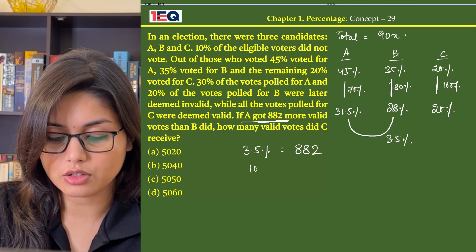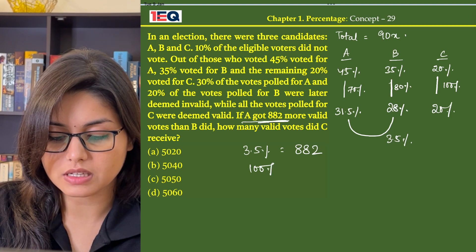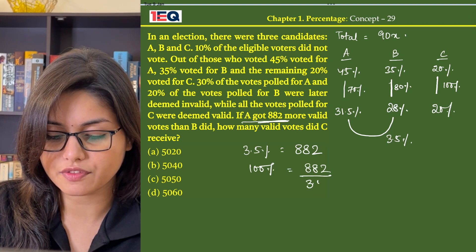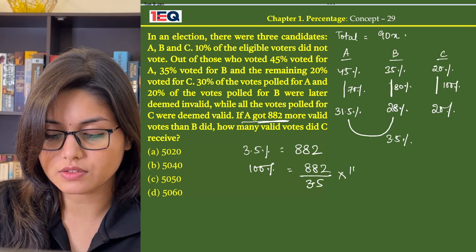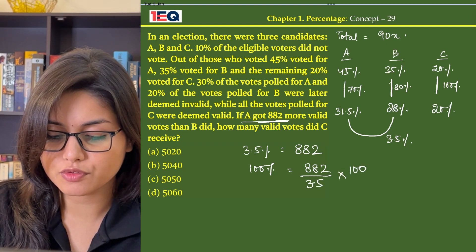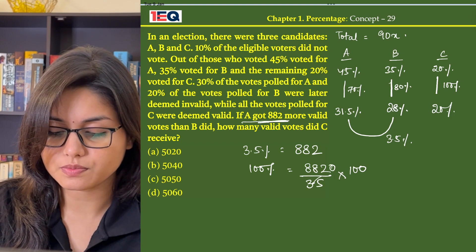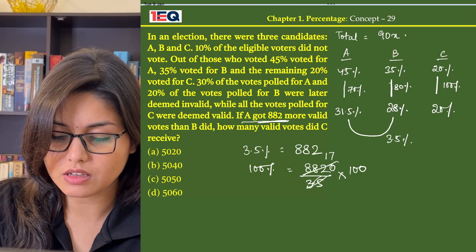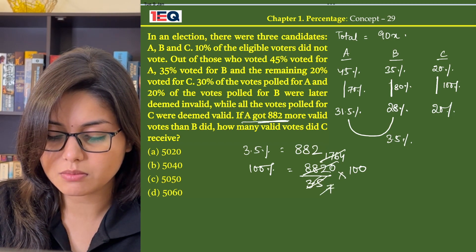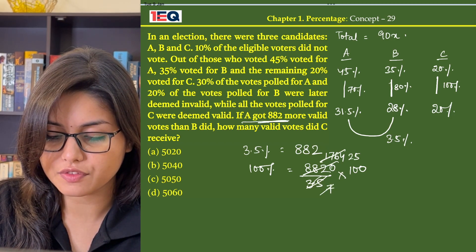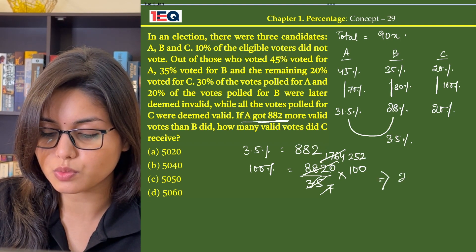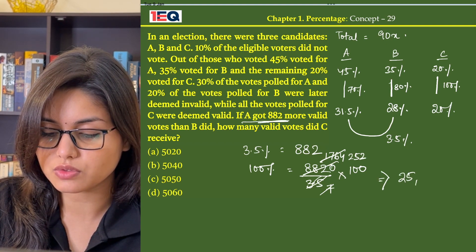That means 3.5% equals 882. From here we can find the value of 100%, which is (882 ÷ 3.5) × 100. To remove the decimal, multiply numerator and denominator: dividing by 5 gives 1764 over 7, and dividing by 7 gives 252. So the total number of valid votes equals 25200.